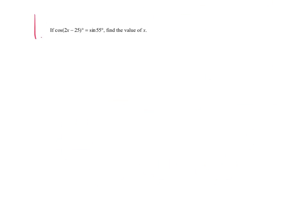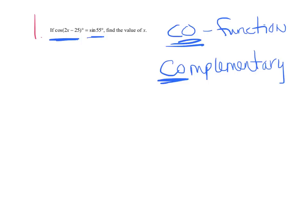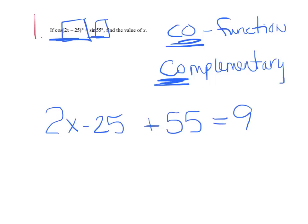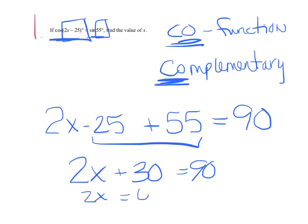Example one. If cosine of 2x minus 25 equals the sine of 55, find the value of x. Well, you notice they don't tell you that they're co-functions. You've got to just recognize that. Notice one side said sine and the other one says cosine. There's your hint that they are co-functions. And co-functions are complementary. So you're just going to take your two angles. I have 2x minus 25 plus 55. And since they're complementary, they add up to 90. Now we'll just solve for x. I really have 2x plus 30 equals 90. 2x equals 60. Therefore, x equals 30.